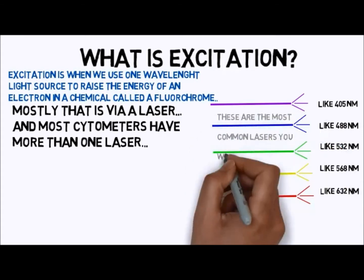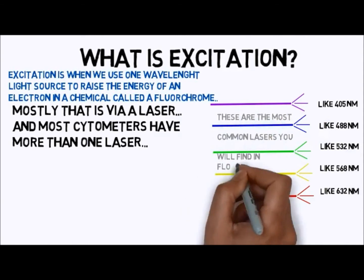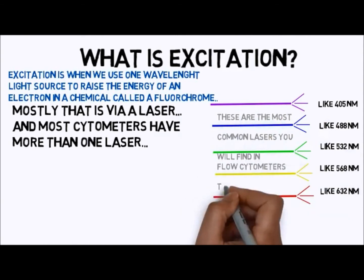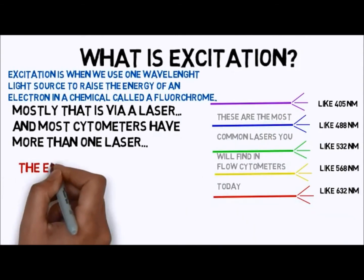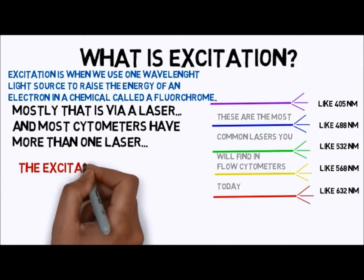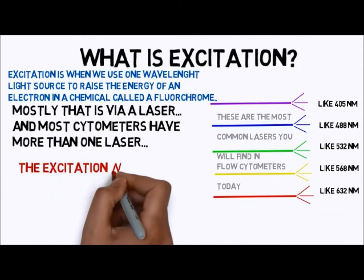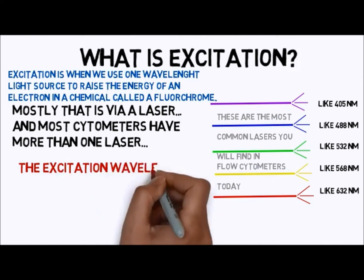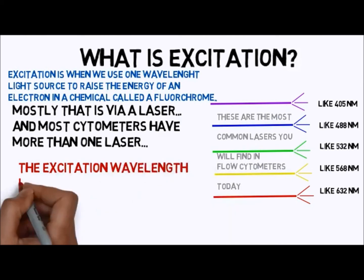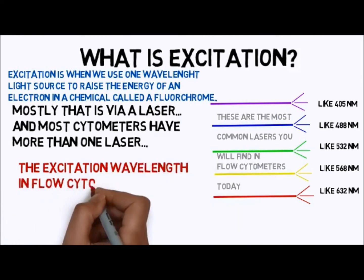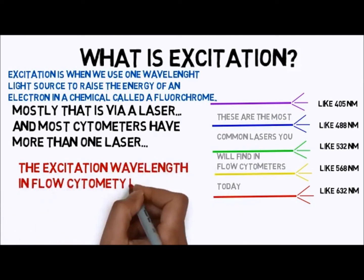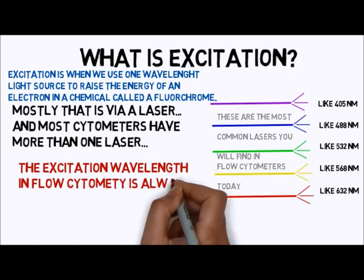These are the most common lasers you'll find in flow cytometers today. Of course, you can also get a true UV laser at 350 nanometers if you need that for a particular application, like sperm cell sorting or excitation of INDO, Hoechst, or DAPI.